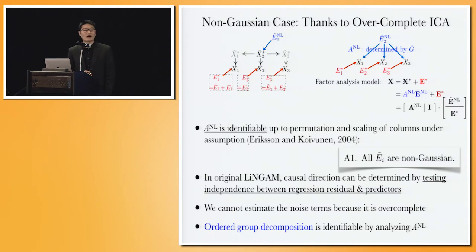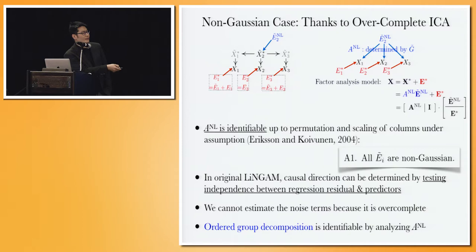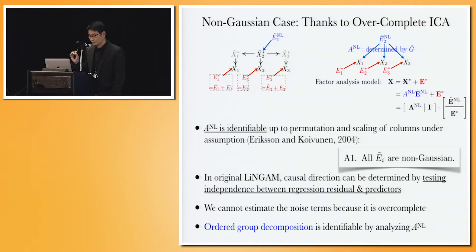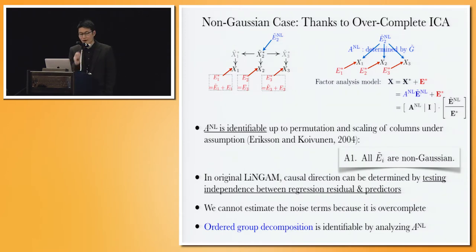In this paper, we focus on the non-Gaussian case. If all noise terms are non-Gaussian, then the mixing matrix A_NL associated with this model is identifiable. This is very useful because by making use of the estimated mixing matrix A_NL, we can immediately find the so-called ordered group decomposition of the underlying structure. In the original linear non-Gaussian models, you can determine causal direction by checking whether the regression residual is independent from the hypothetical cause — the residual will be independent from the predictor for the true causal direction.